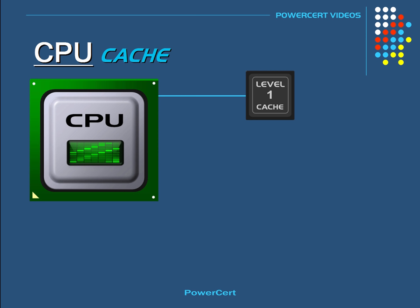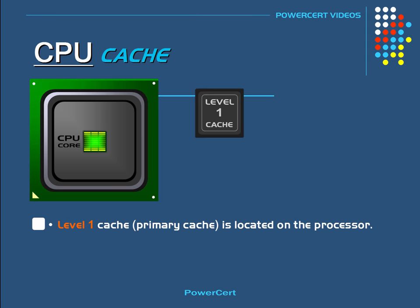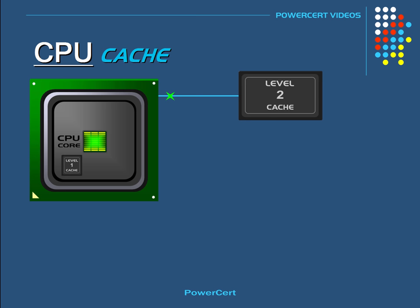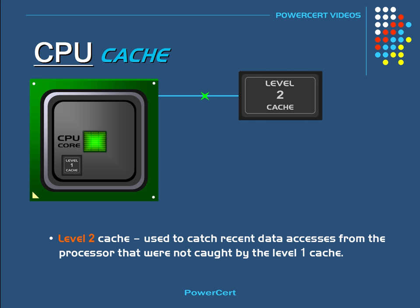CPU cache comes in three different levels. There's level 1 cache, also called primary cache, which is located on the processor itself, so it runs at the same speed as the processor — making it the fastest cache on the computer. There is also level 2 cache, also called external cache, which is used to catch recent data accesses from the processor that were not caught by the level 1 cache.